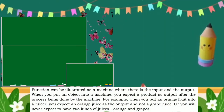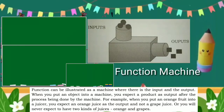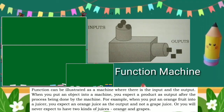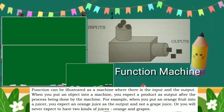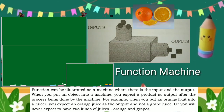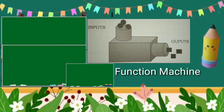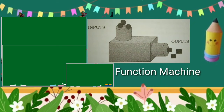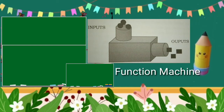A function can be illustrated as a machine where there is an input and an output. When you put an object into a machine, you expect a product as output after the process is done by the machine. For example, when you put an orange into a juicer, you expect orange juice as the output — not grape juice. Or you will never expect to have two kinds of juices, orange and grape.